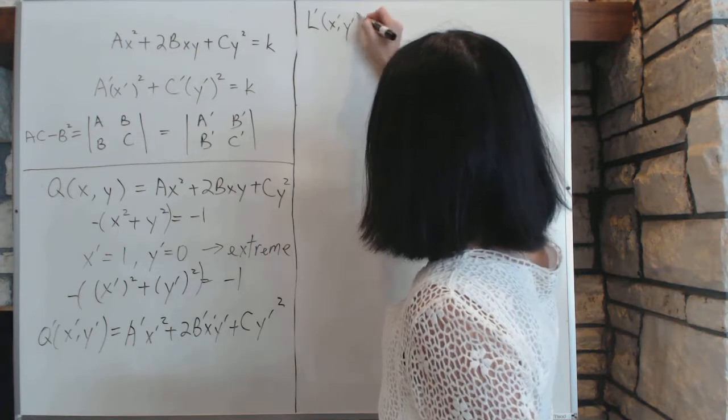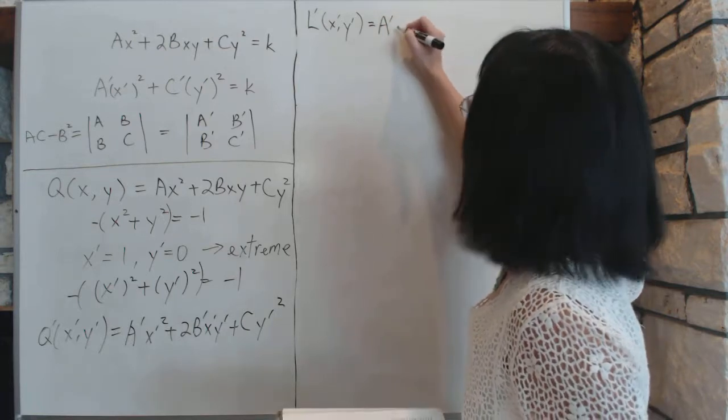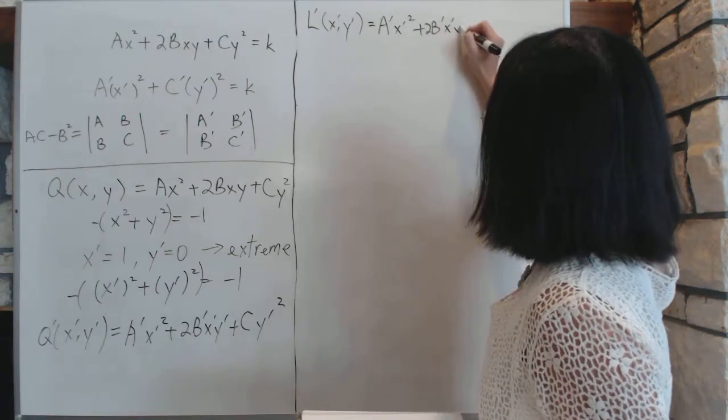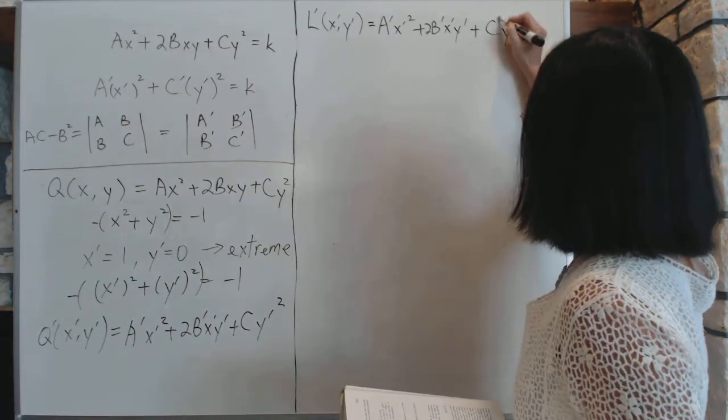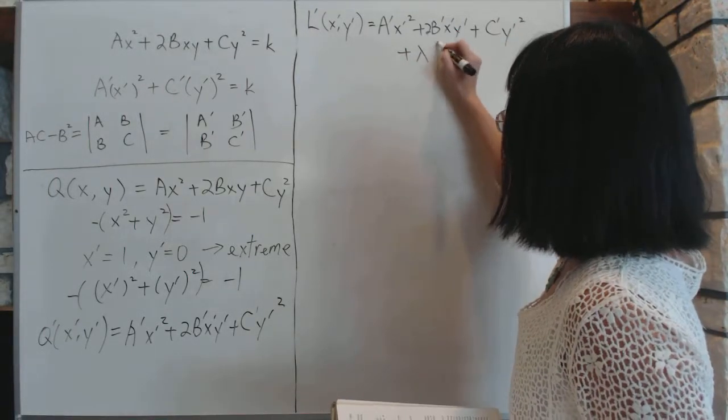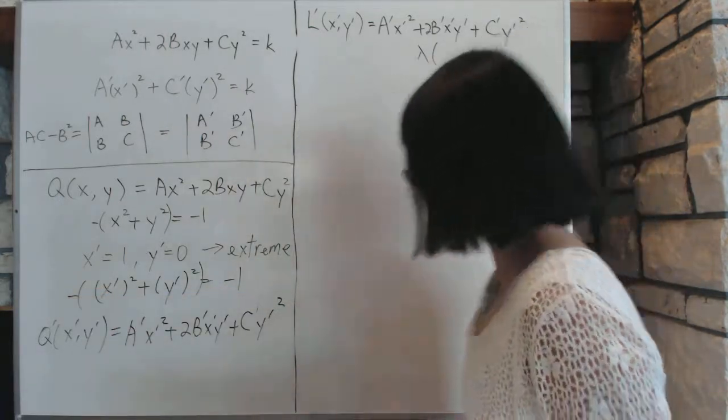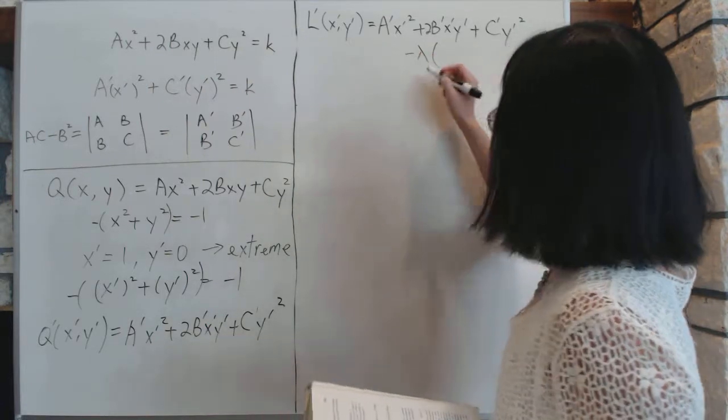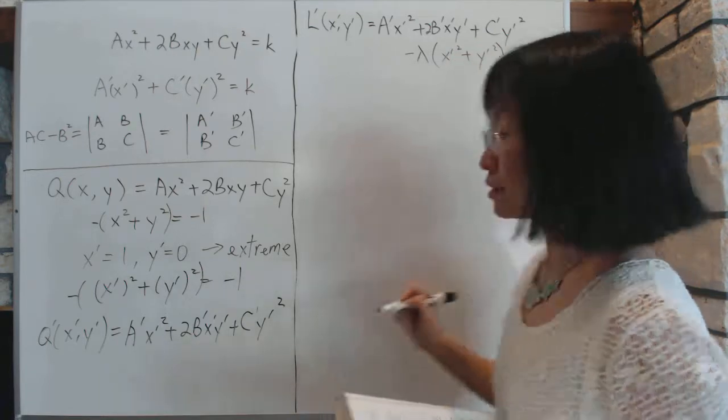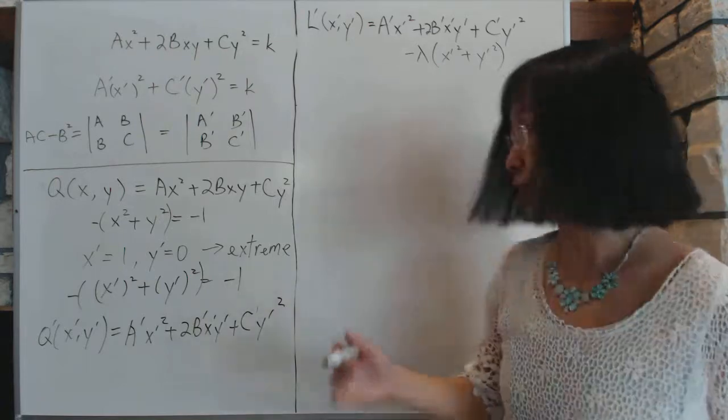So the Lagrangian's method: L(x prime, y prime) equal to copy this whole thing down again, which is a prime x prime squared plus b prime x prime y prime plus c prime y prime squared, and then the Lagrangian multiplier times, and because this is a minus, I put a minus here just for convenience so that we can get a minus here. It's the same, it comes out the same. The minus x prime squared plus y prime squared. This is the Lagrangian's equation.